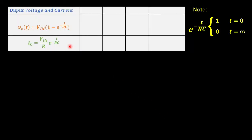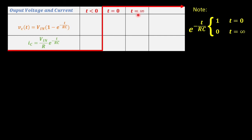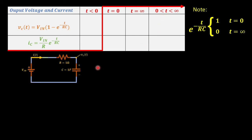I just displayed again the voltage and current equations that we have derived and will be used for the analysis of the charging state. I also prepared a table to record the values at different time phases: time less than zero, time equal to zero, time equal to infinity, and time greater than zero but less than infinity. And we will observe how much time we need to reach the steady state from the transient state. I took an arbitrary value of resistor and capacitor to have one second time constant, the easiest way being one ohm and one farad respectively.